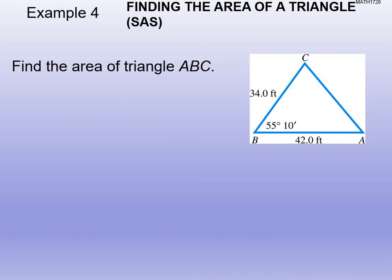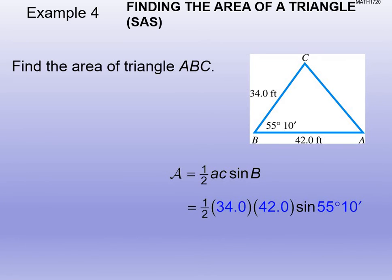Find the area of triangle ABC given: little a = 34, little c = 42, and angle B = 55 degrees 10 minutes. Remember to use the DMS function on your calculator for degrees-minutes. We use Area = ½·a·c·sin(B), substituting: ½ × 34 × 42 × sin(55°10′). Make sure you enter that correctly into your calculator. You should get approximately 586 square feet.